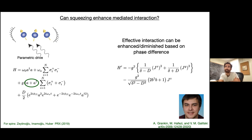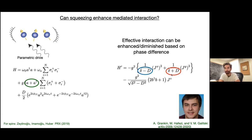Writing the effective spin-spin interaction by integrating out the photonic degree of freedom: one sees that squeezing enhances the coupling for one type of interaction while decreasing it for another, in a phase-sensitive way. The detuning and amount of squeezing both enter. Choosing a different quadrature would give the opposite effect. One must be careful about which quadrature is being squeezed relative to the local oscillator.